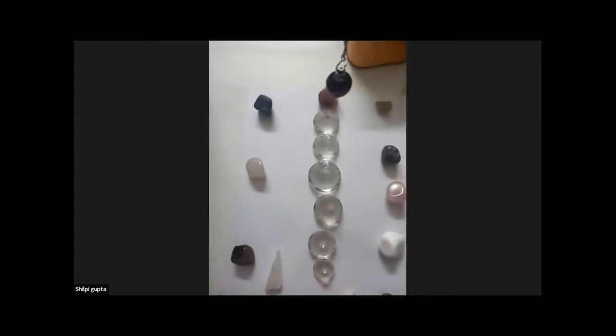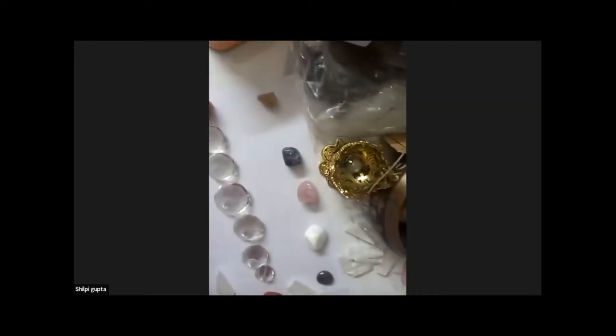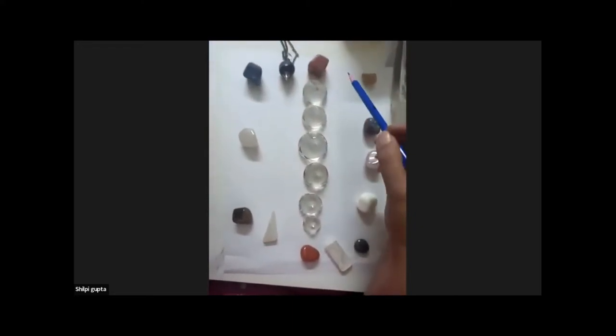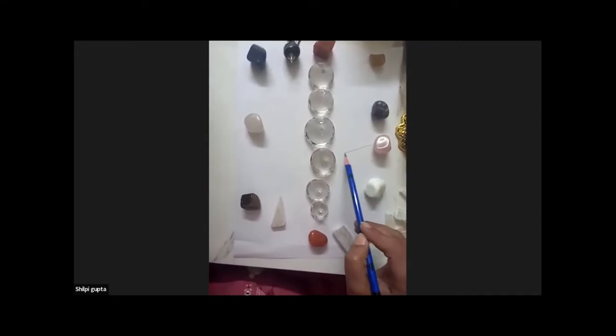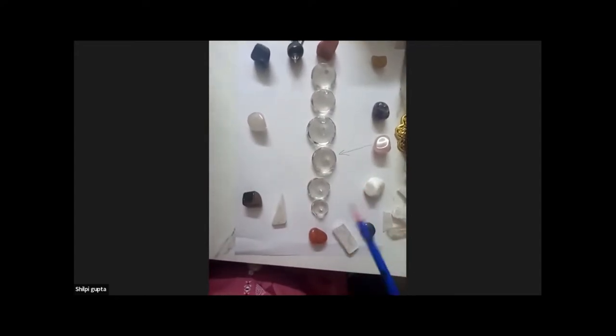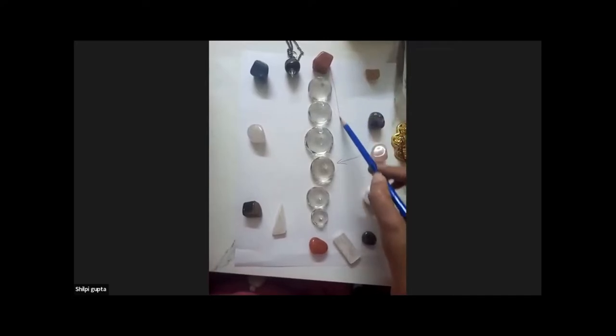So mostly this is orange aventurine and one rose quartz. Now what we will do is clockwise, yes. Now I have two energies required. One is orange aventurine, one is rose quartz. What will I do? I will make an arrow towards my solar plexus chakra crystal, and I will make another arrow towards solar plexus chakra crystal.